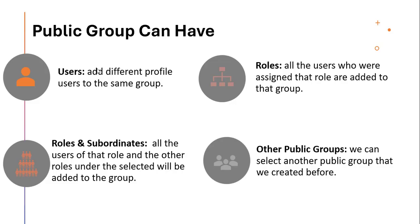When we create a public group, we can add users, roles, roles and subordinates, and other public groups. When we add users, we can add users from different profiles into the same group. When we add roles, all users assigned to that particular role get added to the group. When we add roles and subordinates, all users of that role and the roles beneath it in the hierarchy are added. We can also add another public group to a new public group. I have linked a video on roles and role hierarchy in the description box.